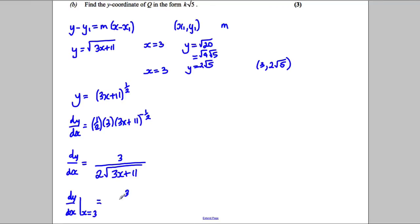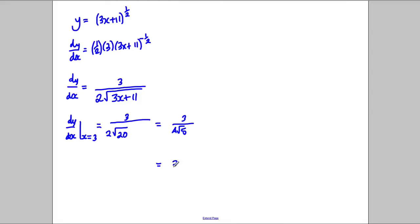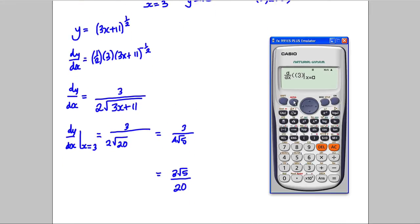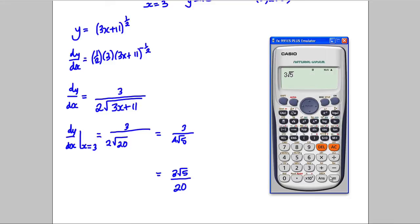We substitute 3 into the equation, so it would be 3 divided by 2 times the square root of 20, which we already said is 2 root 5, giving 4 root 5 on the denominator. We rationalise by multiplying top and bottom by root 5, giving 3 root 5 over 20. We can double-check with a calculator: typing in 3x add 11 to the power of 0.5 and substituting x equals 3 gives 0.335..., and 3 root 5 divided by 20 is exactly the same.